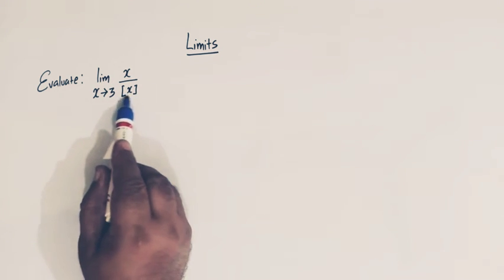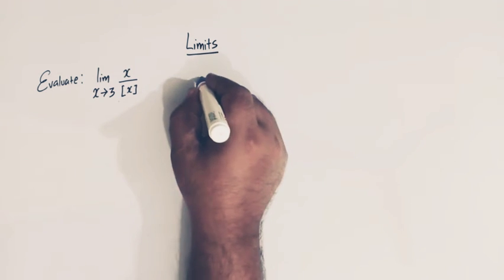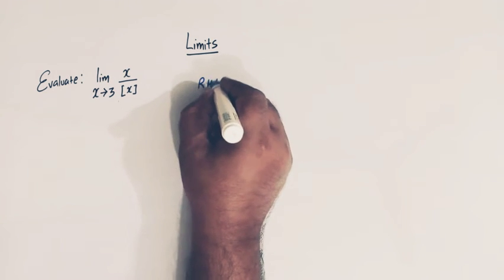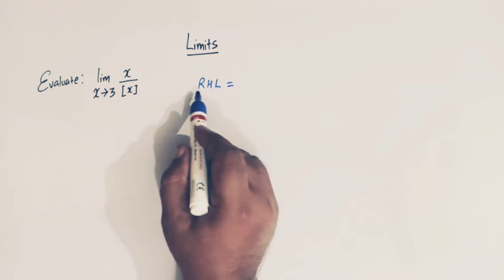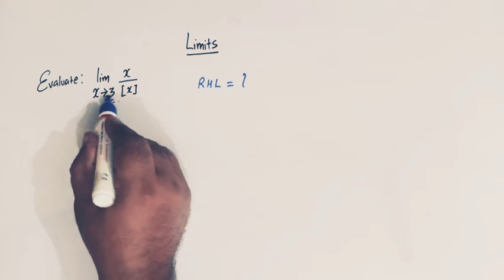Here we have the greatest integer function, and in order to evaluate this limit or to decide whether the limit exists or not, we have to find the left hand limit and the right hand limit. Let us start and first find the right hand limit. We denote the right hand limit by RHL and the point of consideration is 3.